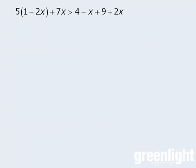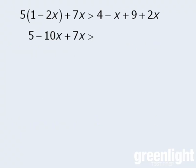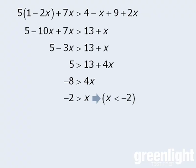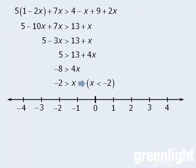To solve this next inequality, we'll first expand the left-hand side, and then simplify the right-hand side. Then we'll simplify the left-hand side, and add 3x to both sides. From here, we can subtract 13 from both sides, and then divide both sides by 4 to get negative 2 is greater than x, or x is less than negative 2. To show this on the number line, we'll draw a circle around negative 2 and then draw an arrow to the left.